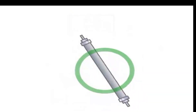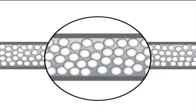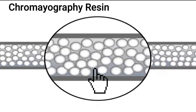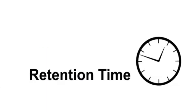The HPLC column is a key component to the system. It is composed of a metal or plastic cylinder packed with micro-scale beads of stationary phase, or chromatography resin. The sample flows through the packed particle bed at a constant flow rate and interacts with the stationary phase differently, therefore traveling down the length of the column to the detector at a different rate. The time required for a component to exit the column, or elute, is called the retention time.